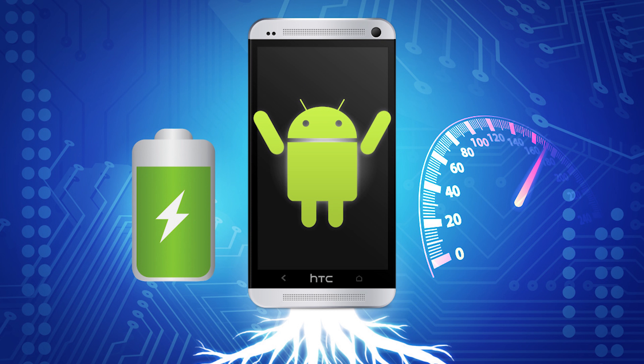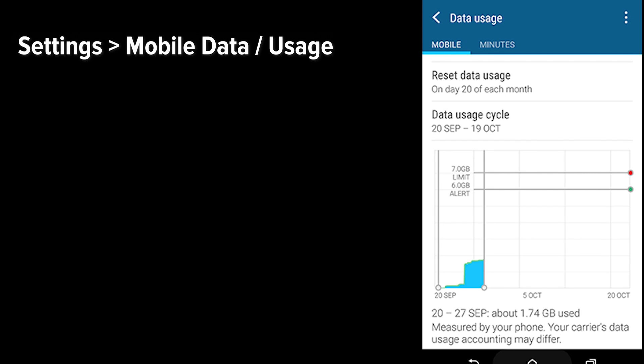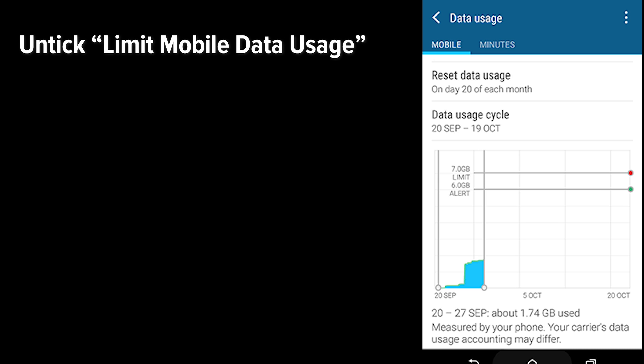Every Android phone lets you set your own mobile data limits and warnings for when you're about to reach your limit. These aren't usually switched on by default, but maybe you've set a limit previously, have upgraded your tariff, and have forgotten to update your mobile data limit accordingly. To check this, go to Settings, Mobile Data, or Mobile Usage. You'll see a graph showing your data usage along with a whole bunch of settings. Make sure your data limits in the graph correspond with what your network allows by dragging the limit up or down in the graph. Alternatively, you can turn off all data limits by unticking the Limit Mobile Data Usage box.